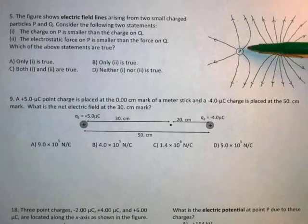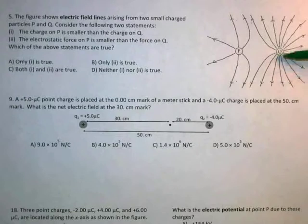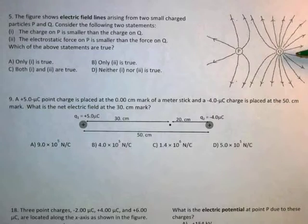So I see that there's more field lines coming out of Q than there are out of P. We know that the stronger electric field is associated with lines that are closer together. And we also know that electric field is stronger for a larger charge. If you don't have an intuitive feel for that yet, that's fine.